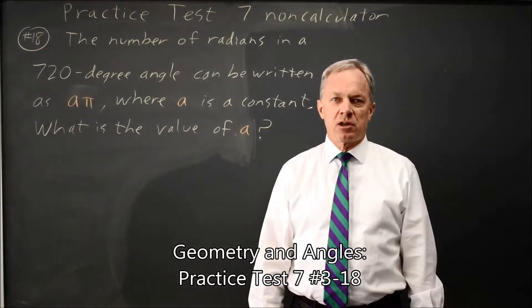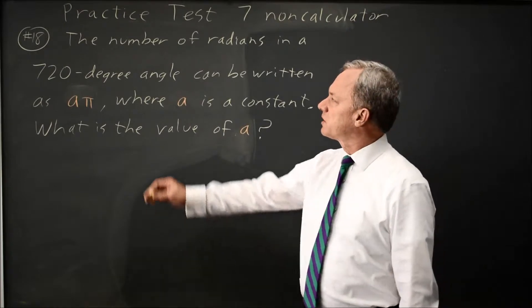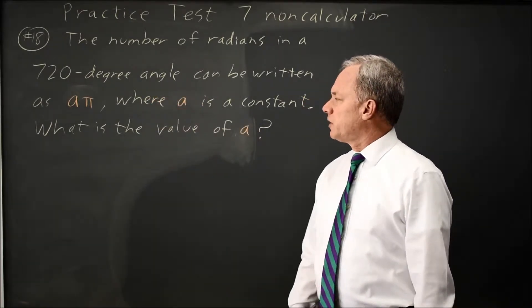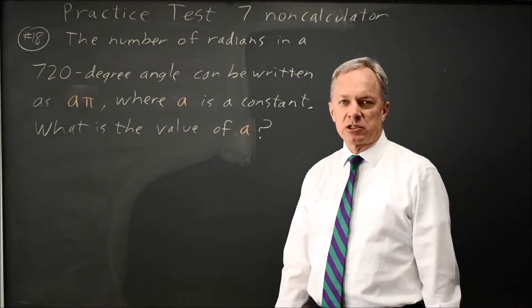This is SAT Test 7, non-calculator question number 18. College Board asks you to convert 720 degrees to radians. You can either think of this as a units conversion problem or as a geometry problem.